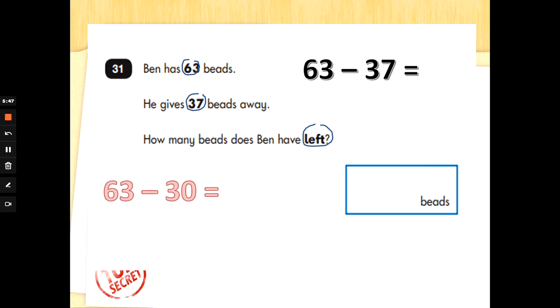So take away the 10s first. 63, 53, 43, 33. Then we need to take the 1s from the second number. And we've got 7 ones. So we need to do 33 take away 7.